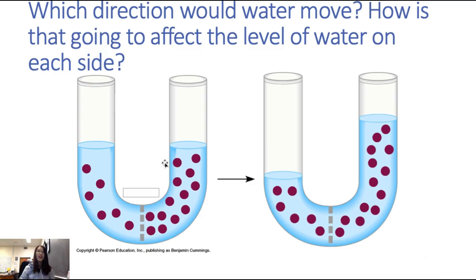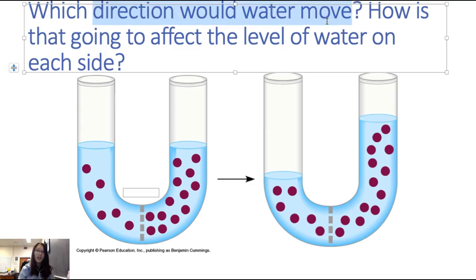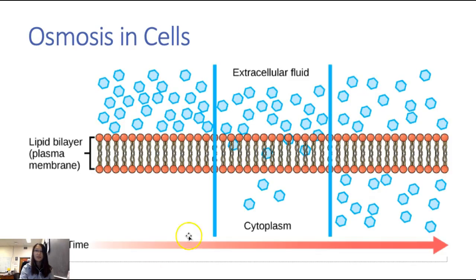Let's practice — pause the video and answer this question. This picture is asking which direction water would move. Salt cannot go through the semi-permeable membrane, but water can. We have higher water concentration on the left side and lower water concentration on the right side, which means water will move from left to right.